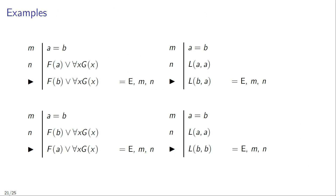Here are a few examples of correct applications of identity elimination. Starting in the top left corner: suppose that in line M we have the sentence A equals B, and in line N we have the sentence either FA or all X are G. You can then infer that either FB or all X are G, and justify this inference by identity elimination applied to lines M and N.